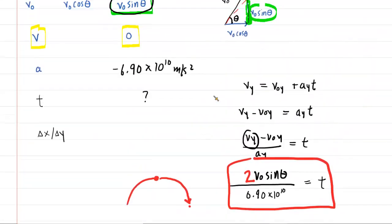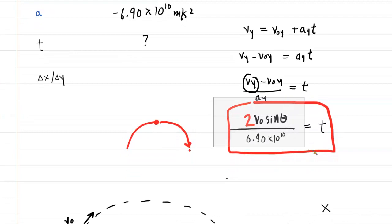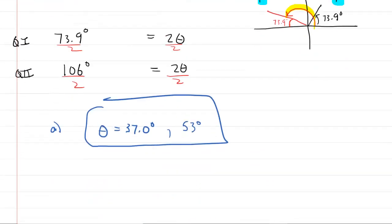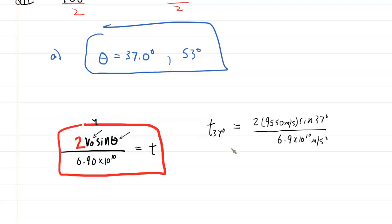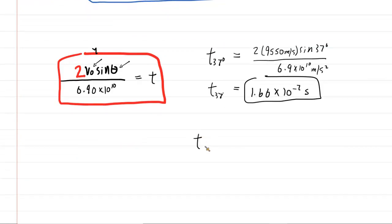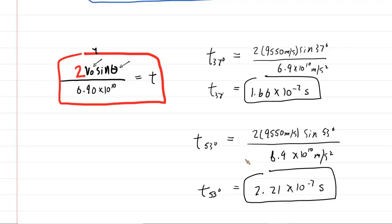For part B, we calculate the total duration of flight for each angle using t = 2v₀ sin θ / a. For θ = 37°: plugging in v₀ = 9550 m/s gives approximately 1.66 × 10⁻⁷ seconds. For θ = 53°: the calculation gives approximately 2.21 × 10⁻⁷ seconds. These are the two flight durations corresponding to the two projection angles.